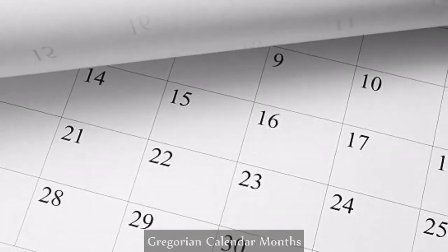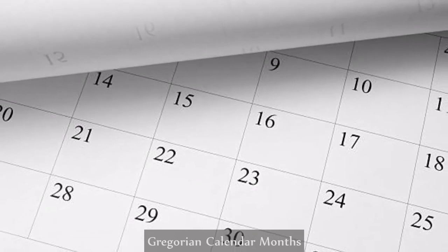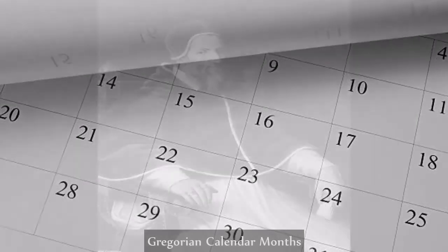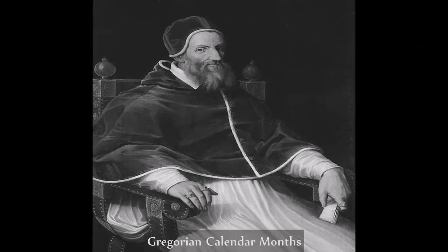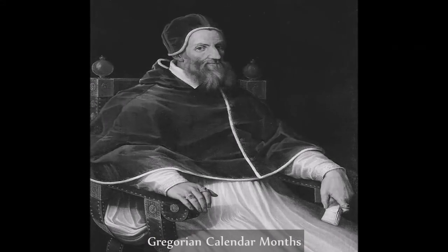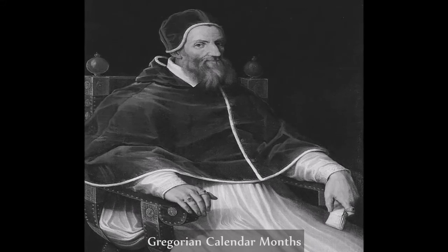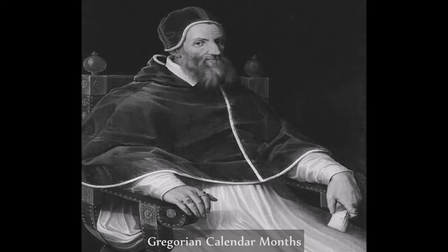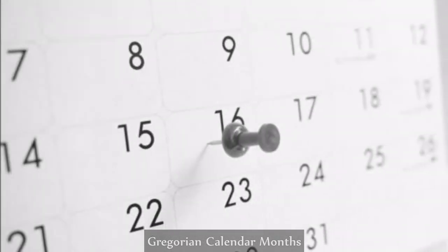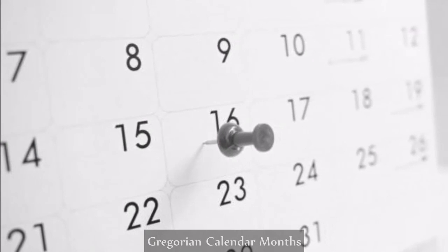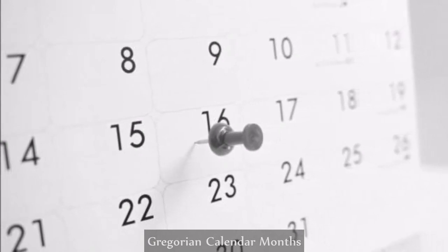The Gregorian calendar is the calendar used in most of the world. It was introduced in October 1582 by Pope Gregory XIII as a minor modification of the Julian calendar. The Gregorian calendar, like the Julian calendar, is a solar calendar with 12 months of 28 to 31 days each. The year in both calendars consists of 365 days, with a leap day being added to February in the leap years. The months and length of months in the Gregorian calendar are the same as for the Julian calendar.